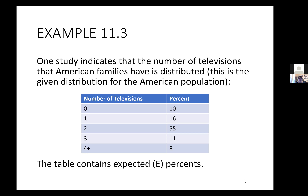One study indicates that the number of televisions that American families have is distributed — this is the given distribution for the American population. This table represents what they expect the percentage of television ownership to be. So no televisions in the household: they expect 10% of the population to have no televisions, 16% to have one television, 55% have two, et cetera. So this is what they expect — historically they've determined these percentages. Then they conduct a test and get a sample.